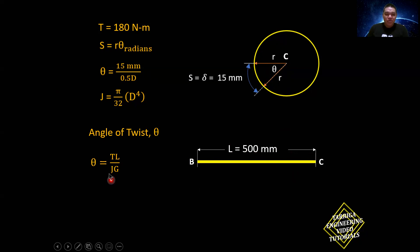J is what we already solved, now expressed in terms of diameter. G is called modulus of rigidity, or the shear modulus, and that is expressed in gigapascal. Theta is this, the angle of twist. It's twisted because of the lever CD. So substituting the values, that would be 15 mm over 0.5 of diameter. That is theta. Torsion 180, multiply by 500.